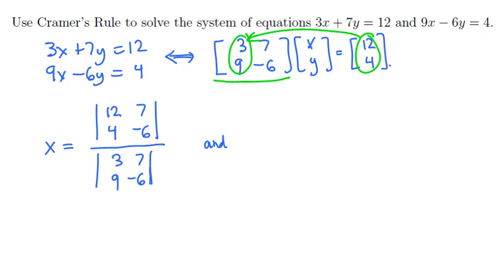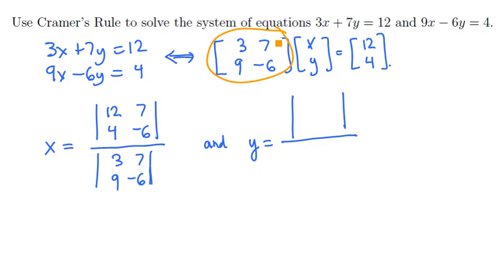And the y value should be a similar ratio of determinants. The top determinant is the determinant of the coefficient matrix, but with the second column replaced by the final column. That is, the determinant of the matrix [3, 12; 9, 4]. And then we're going to divide again by the coefficient matrix, unchanged.